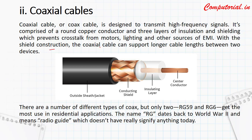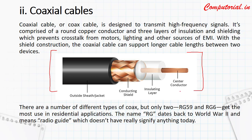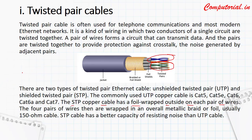With the shield construction, the coaxial cable can support longer cable lengths between two devices. Because it has so many shields and protection, it is mostly used for longer networks. That's why these cables are mostly used in MANs. If asked which cable is used in MANs, your answer will be coaxial cable. And for LANs, the answer is twisted pair cable. Remember all these things.